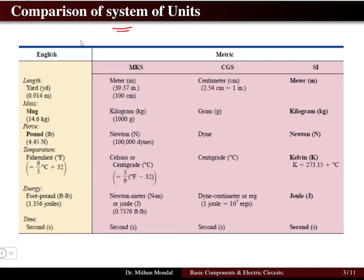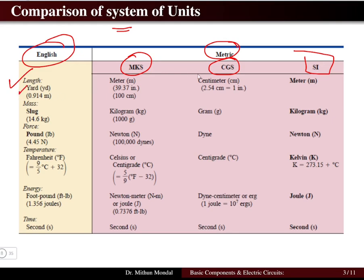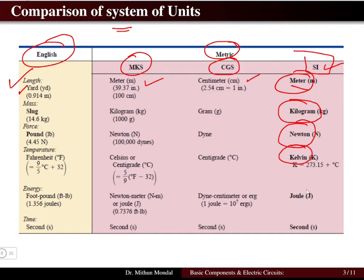Comparing various systems: for length, the English system uses yards, MKS uses meters, CGS uses centimeters, and SI uses meters. In SI, length is in meters, weight in kilograms, force in newtons, temperature in kelvin, energy in joules, and time in seconds.